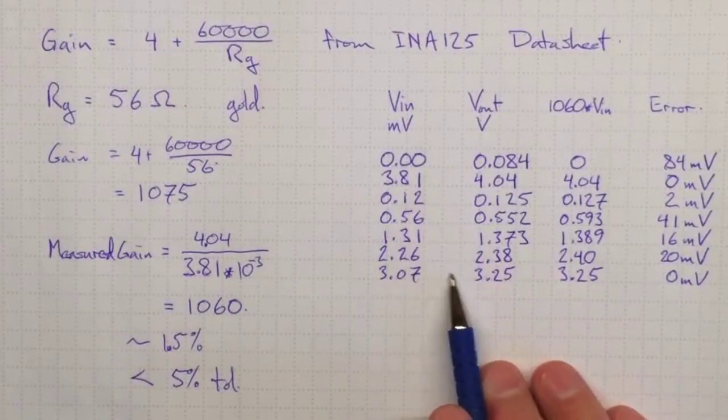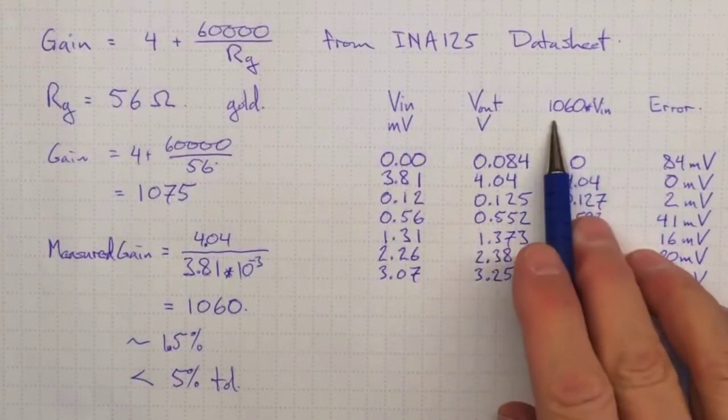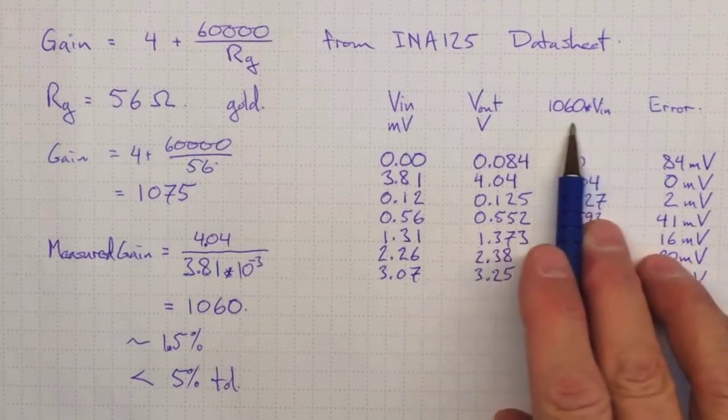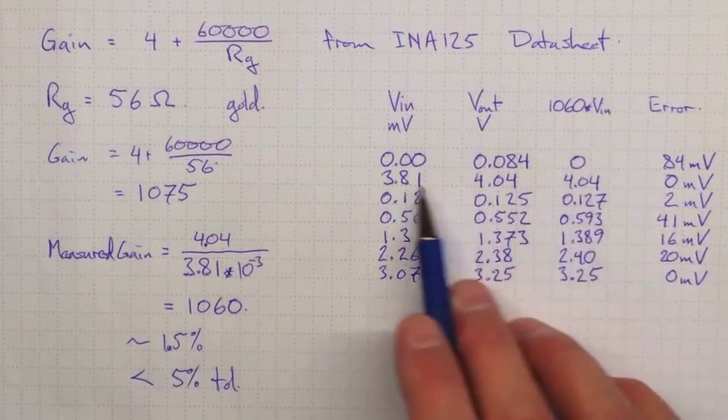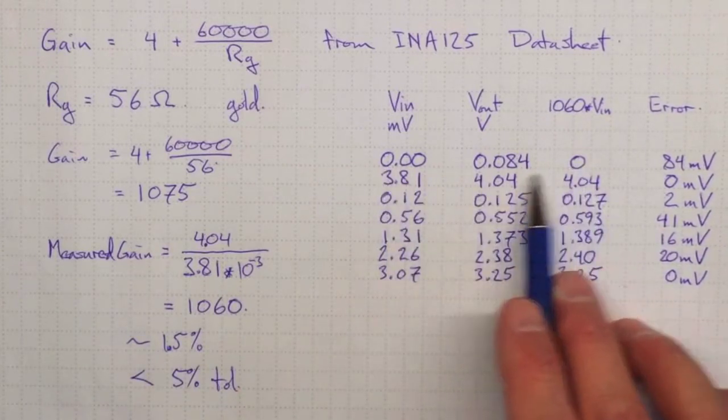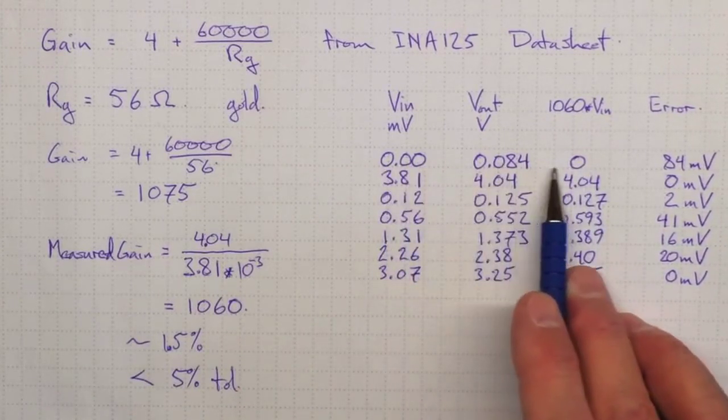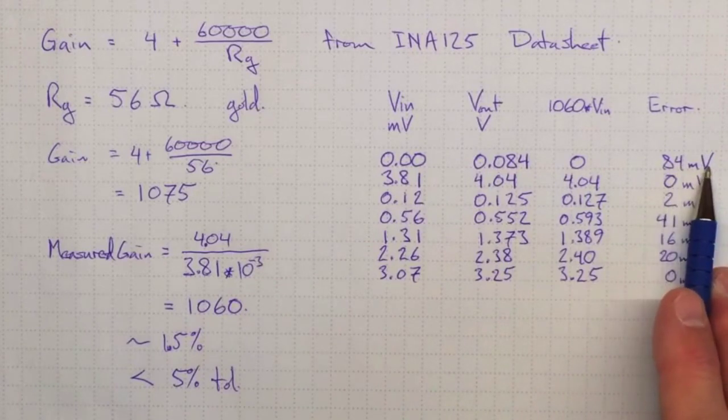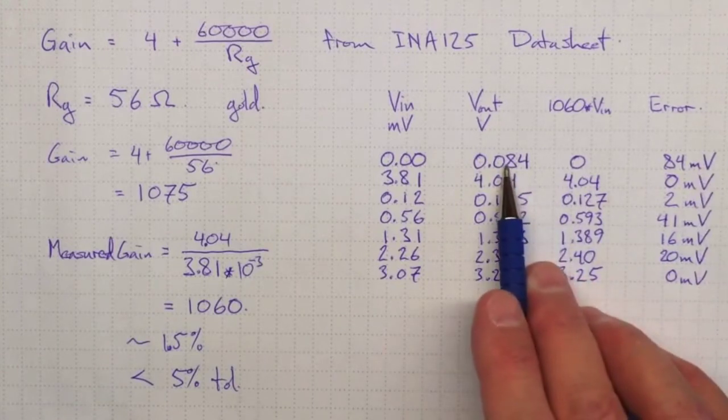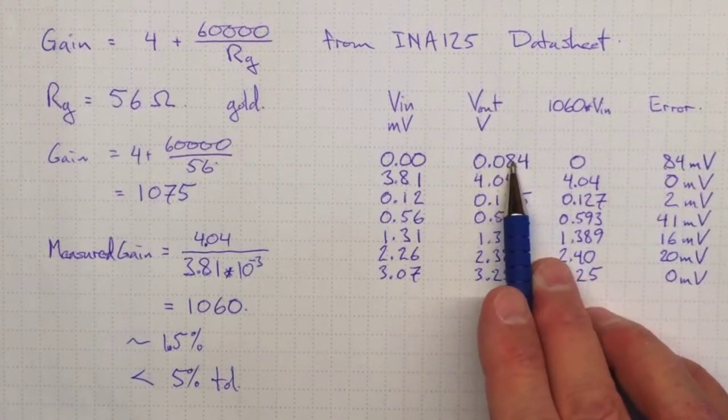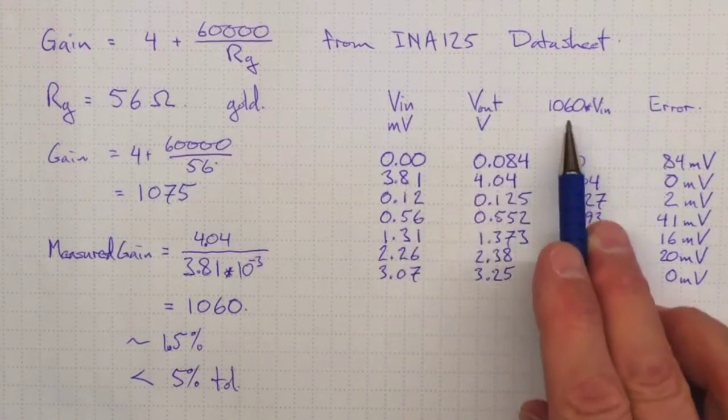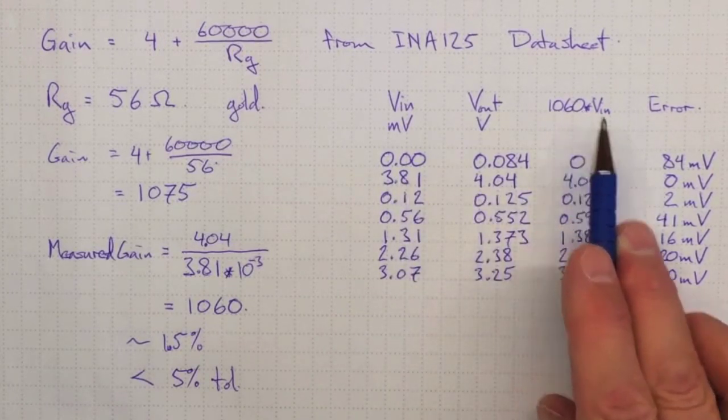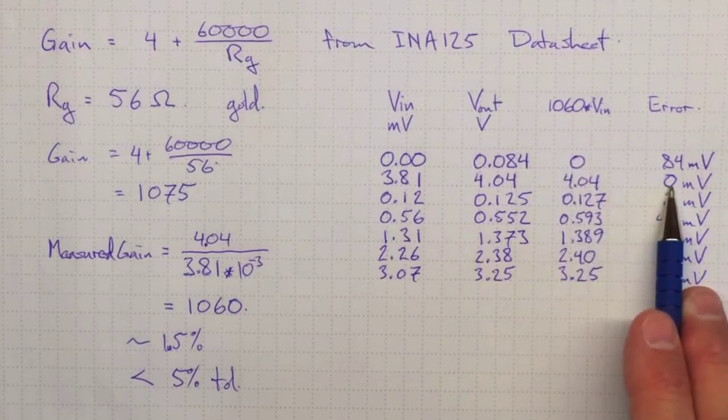If I take some more points here, from actual measurements, I can see how well our model of a gain of 1,060 from our measured maximum gain works out. For 0, obviously we're wrong, because 0 should be 0, and we're off by 84 millivolts. That's a fairly big problem, right down around 0, because the output of the amplifier will never get to quite 0 volts. 3.81 and 4.04, that was the basis of our calibration for 1,060 gain. So, of course, there's no error there.